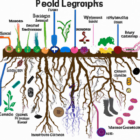Nematodes are tiny worms that live in the soil. They feed on organic matter and bacteria and help decompose plant residues. Nematodes play a crucial role in soil fertility by breaking down organic matter, which releases nutrients into the soil.